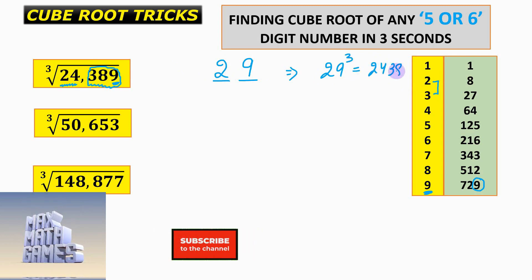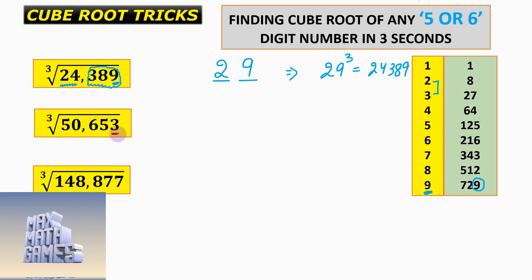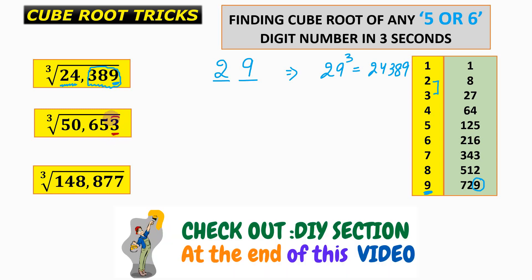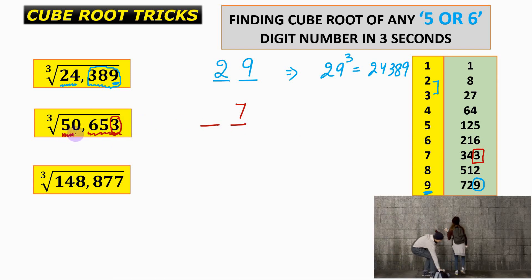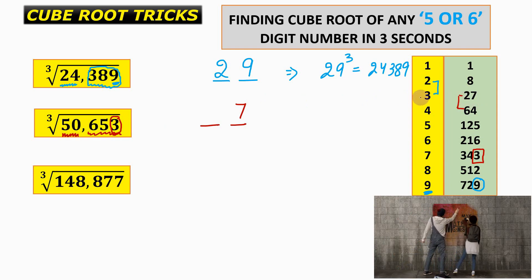For the next question, the unit place is 3. A unit place of 3 in the cube occurs only when the unit place of the original number is 7, so we write 7. We discard the last three digits of 50,653 and are left with 50. Since 50 lies between 27 (3³) and 64 (4³), the tens digit is 3, giving the answer 37.